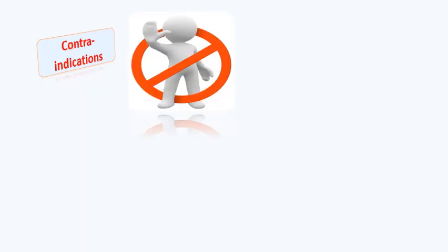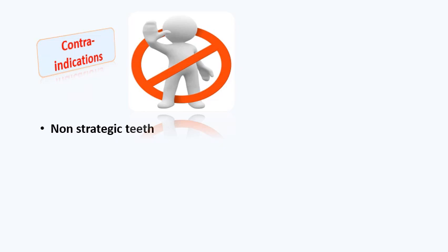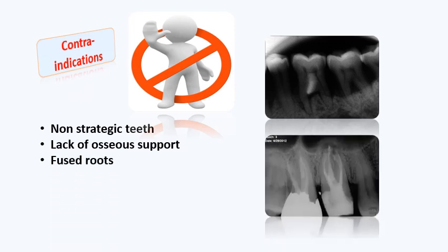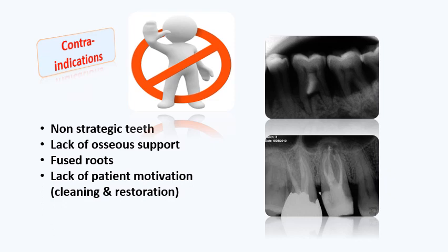Contraindications of the resective approach: non-strategic teeth — as discussed, the strategic value of the tooth is very important. Lack of osseous support — the remaining tooth must have good bone support. Fused roots: when managing fused roots, intervening on one root will likely go through the other, so roots must be spread or separated for resection to be feasible.